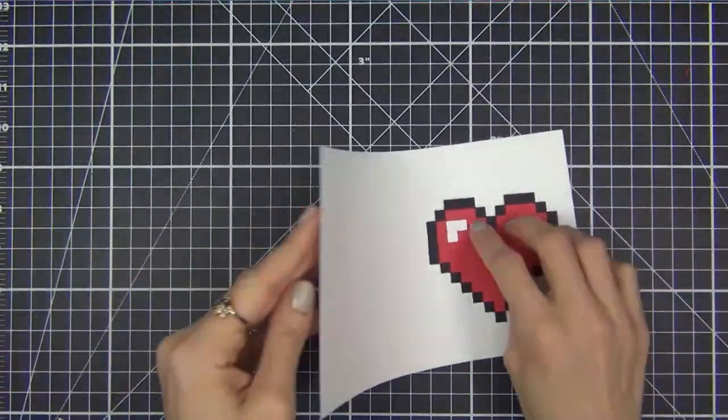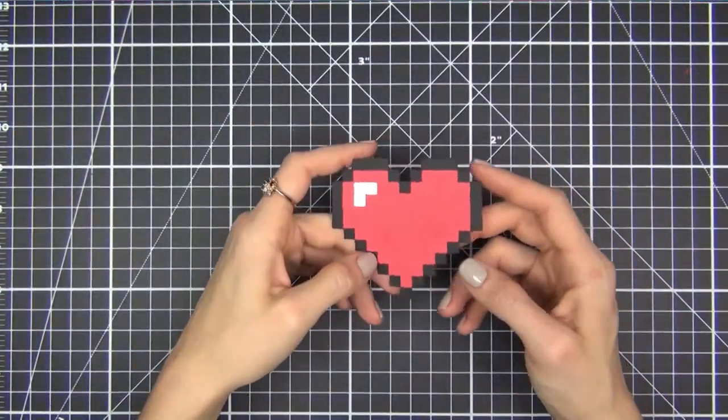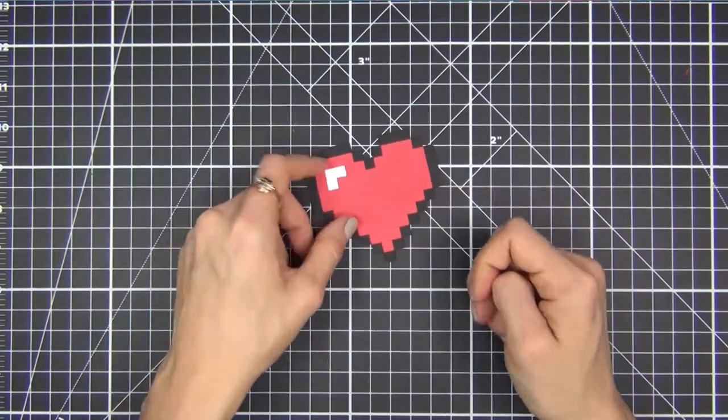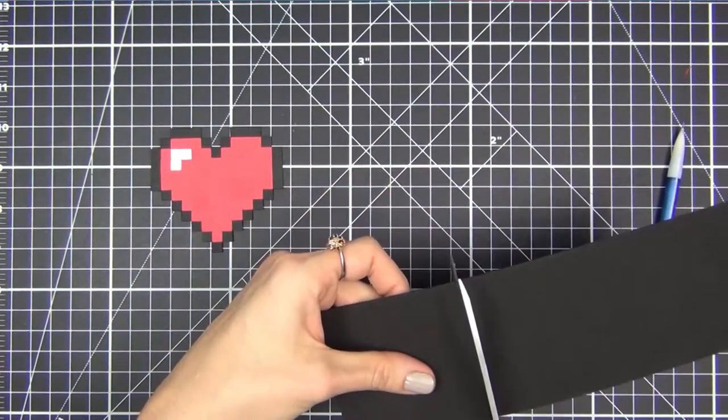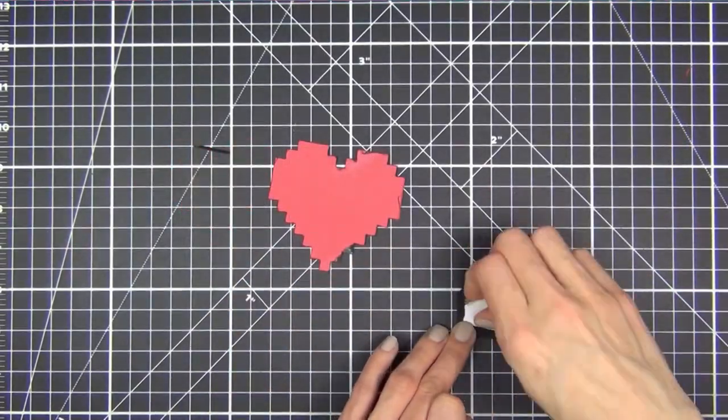Here I am taking a scrap piece of cardstock and folding it over the heart so I can run it through my die cut machine with no dies to make sure the squares are adhered really well. Next, I cut out some black fun foam and adhere it to the back of my heart with double sided tape to give it some dimension.